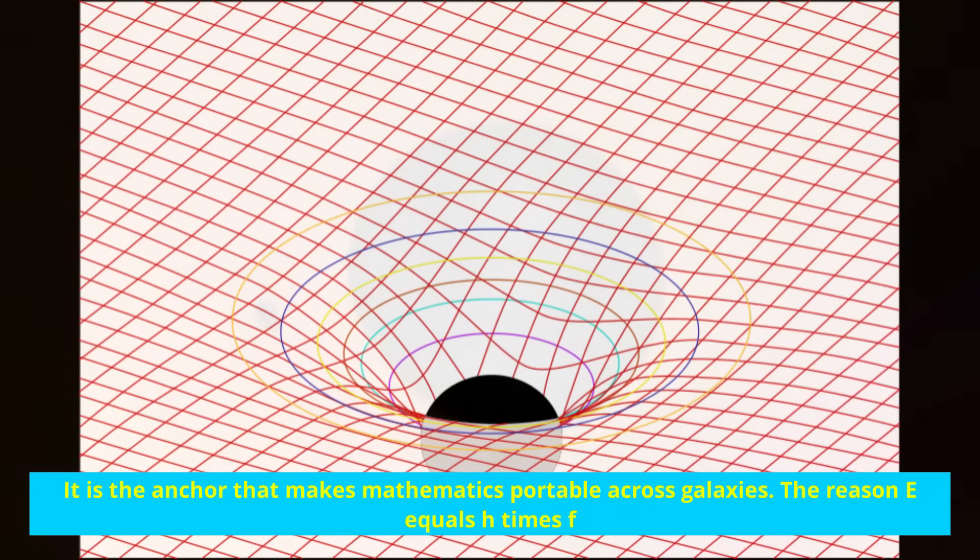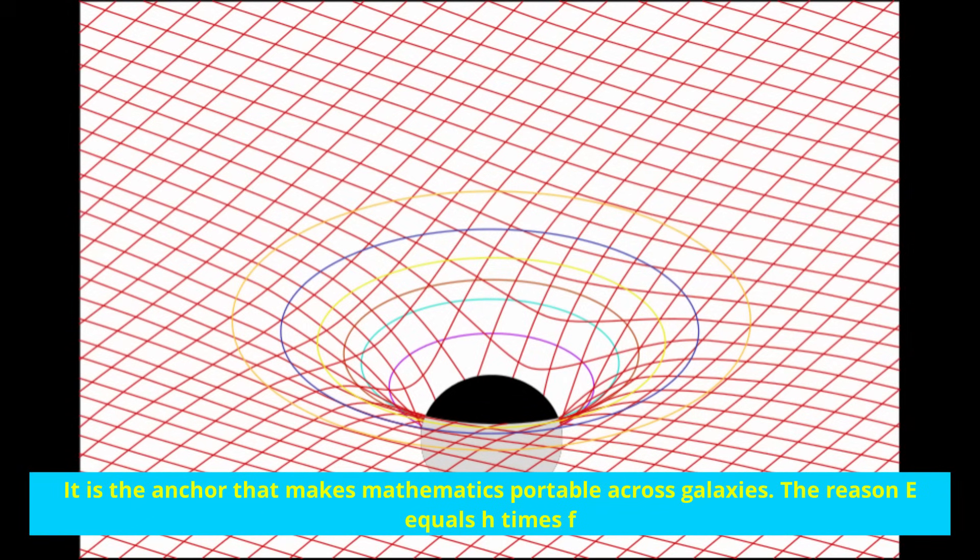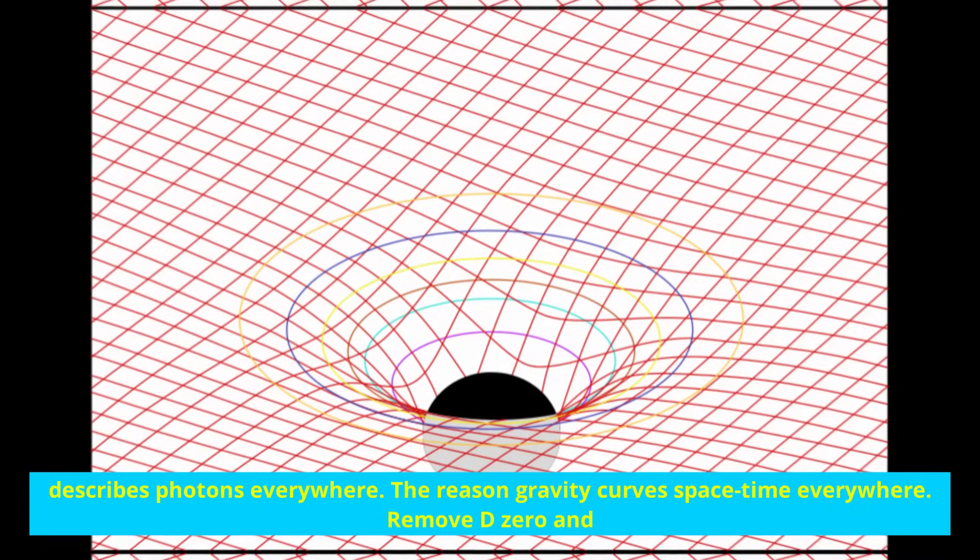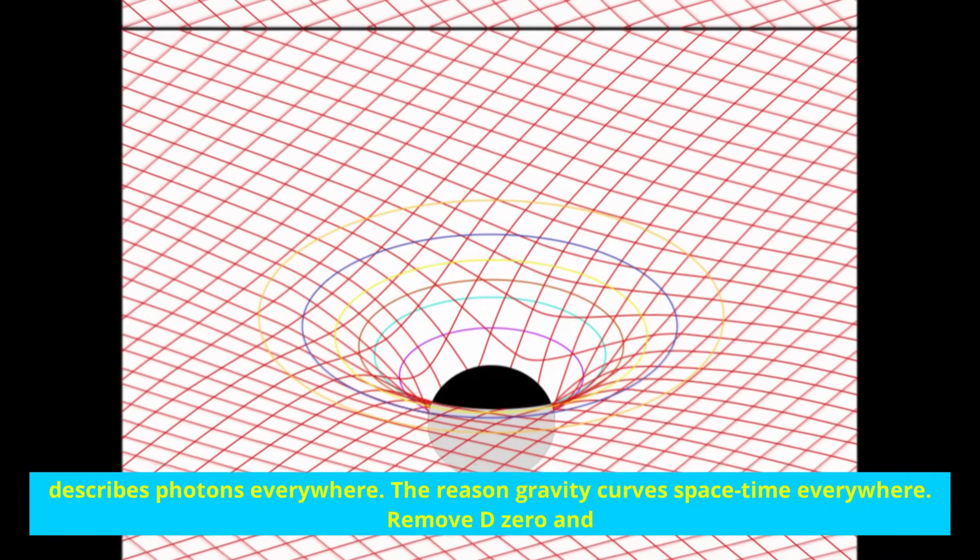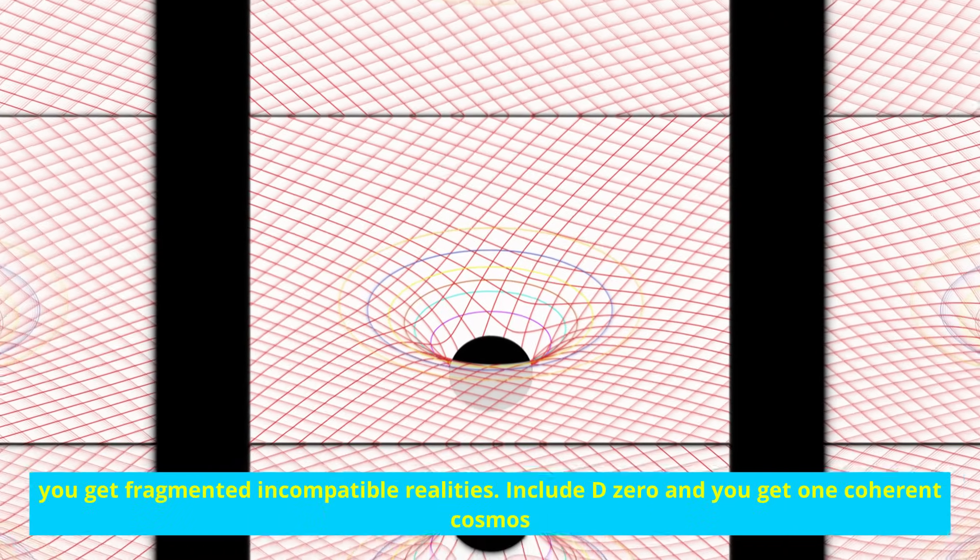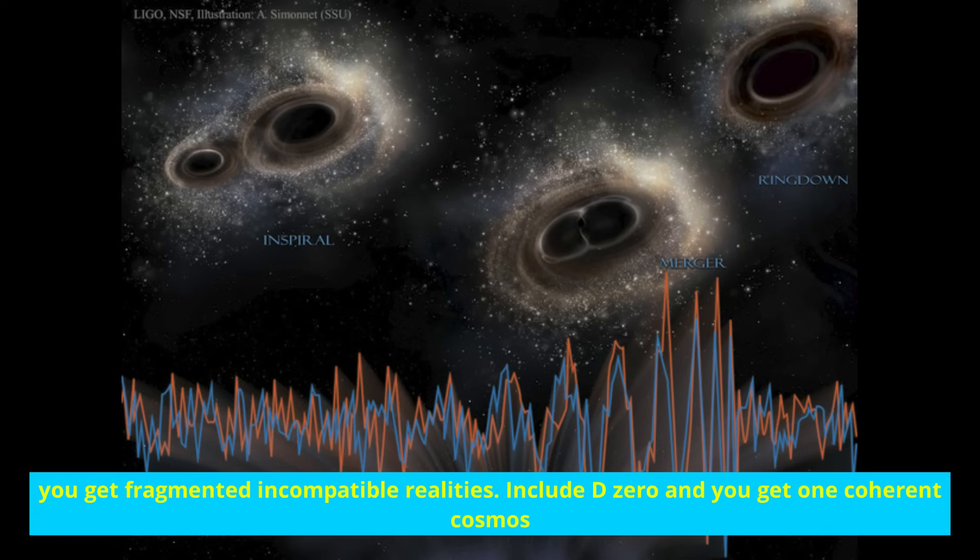It is the anchor that makes mathematics portable across galaxies, the reason E equals H times F describes photons everywhere, the reason gravity curves spacetime everywhere. Remove D zero and you get fragmented, incompatible realities. Include D zero and you get one coherent cosmos with shared rules.